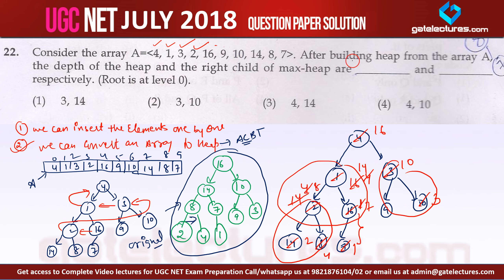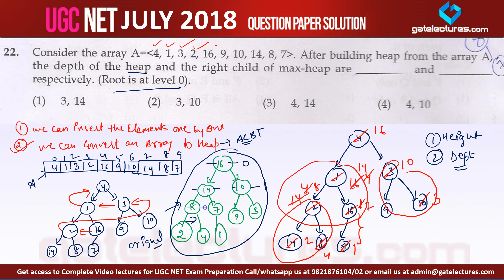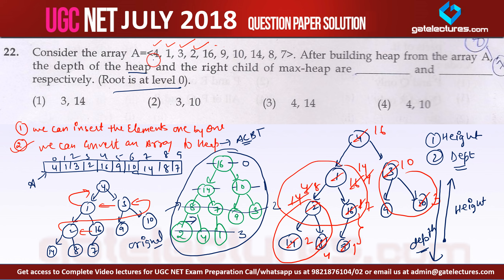They are asking for the depth of the heap and the right child. We have both height and depth concepts. Height is measured from leaf to root; depth is measured from root to leaf. Assuming root is at level 0, level 1 is the next row, level 2 follows, and level 3 is the deepest. So the depth of the tree is 3.